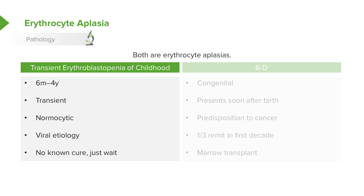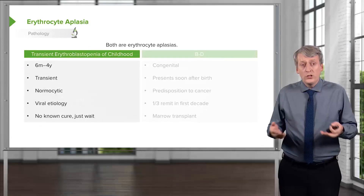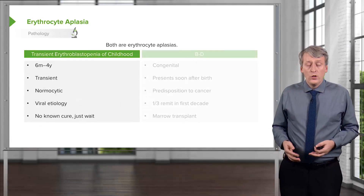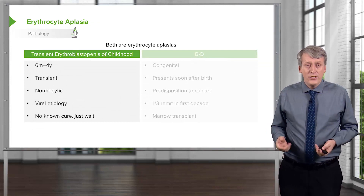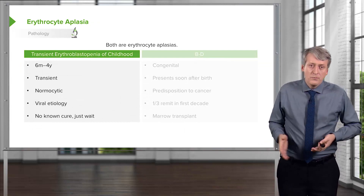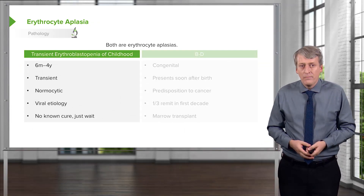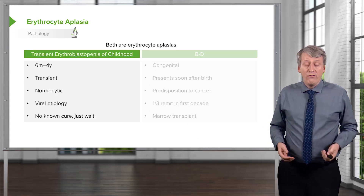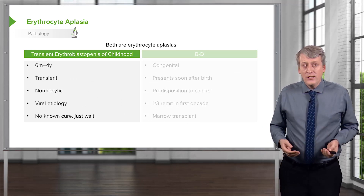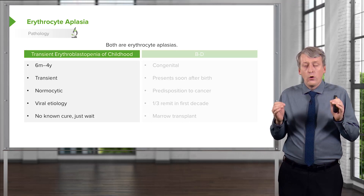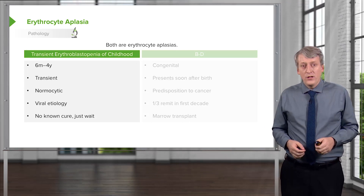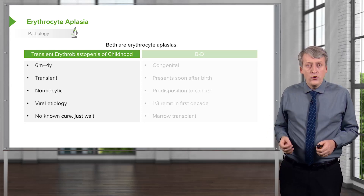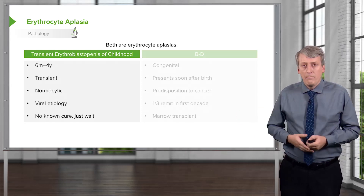There is no known cure for TEC, but the good news is it always resolves on its own. Typically these children gradually become more pale, develop lethargy, and progress through the signs and symptoms of anemia until the parent brings them in for evaluation. You get a CBC and notice a pure erythrocyte aplasia. These patients are watched over time, sometimes requiring transfusions, and then over a few months they get better.